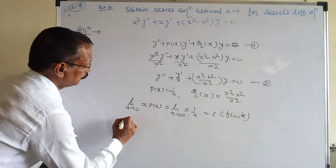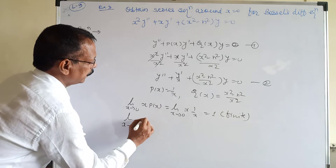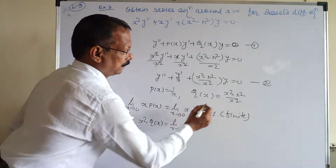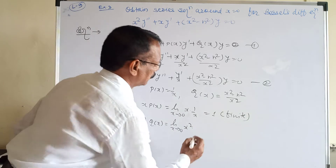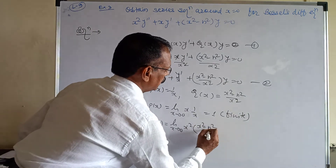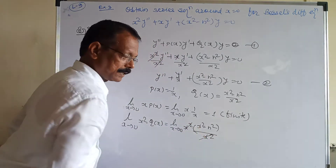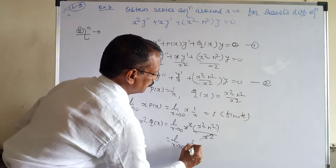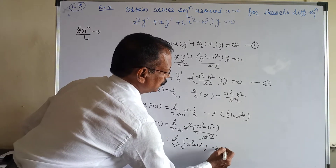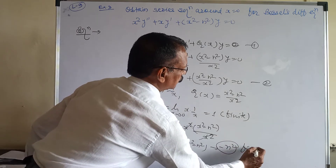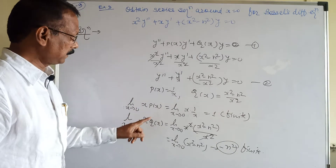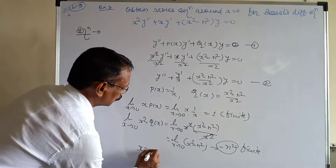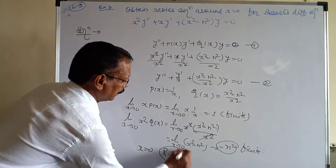Also, lim(x→0) x²·Q(x) = lim(x→0) x²·(x² − n²)/x² = lim(x→0) (x² − n²) = −n², which is also finite. Since both lim(x→0) x·P(x) and lim(x→0) x²·Q(x) are finite, x = 0 is the regular singular point of the given differential equation.